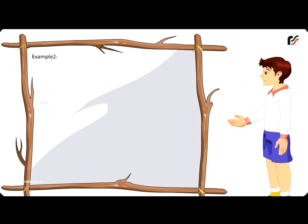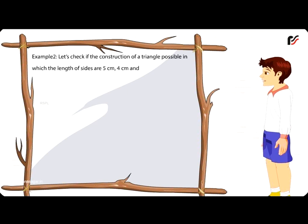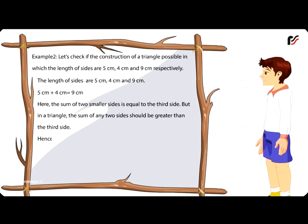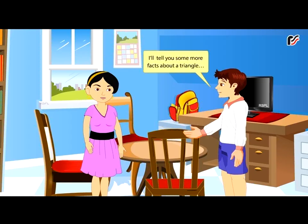Example 2: Let's check if construction of a triangle is possible with sides 5 cm, 4 cm and 9 cm. Here, 5 cm + 4 cm = 9 cm. The sum of two smaller sides is equal to the third side. But in a triangle, the sum of any two sides should be greater than the third side. Hence, no triangle is possible with sides 5 cm, 4 cm and 9 cm.